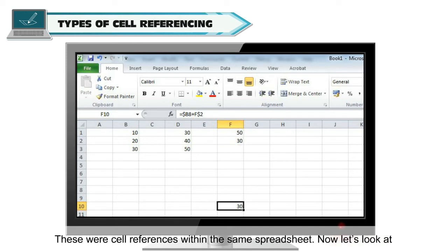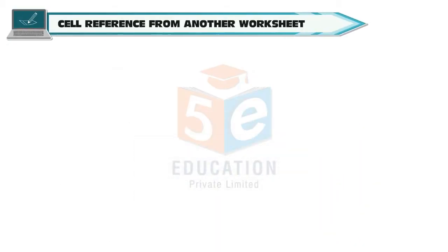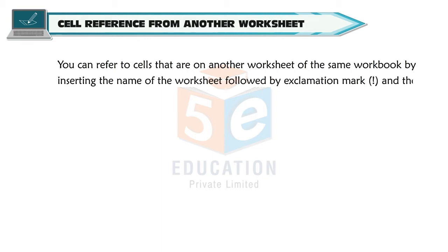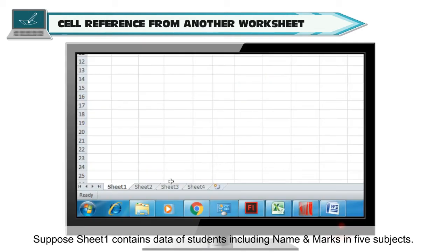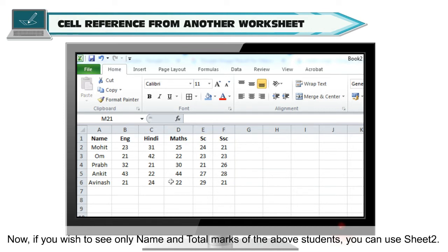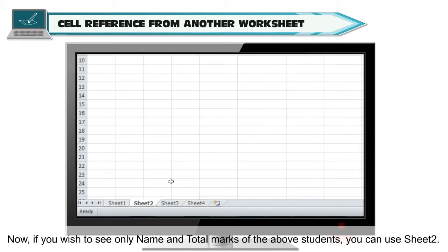These were cell references within the same spreadsheet. Now let's look at cell references from another worksheet. You can refer to cells on another worksheet of the same workbook by inserting the name of the worksheet followed by an exclamation mark and then the cell address or cell range. For example, suppose Sheet 1 contains data of students including name and marks in five subjects. If you wish to see only name and total marks, you can use Sheet 2.